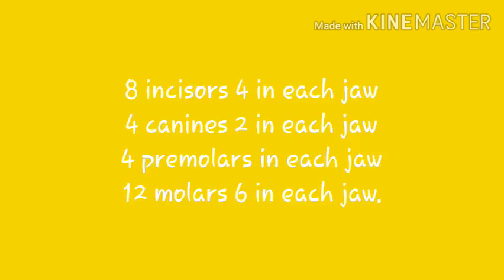There are 8 incisors — 4 in each jaw; 4 canines — 2 in each jaw; 4 premolars in each jaw; and 12 molars — 6 in each jaw.